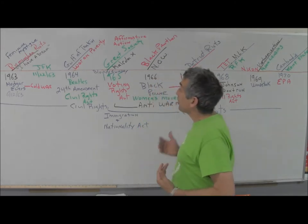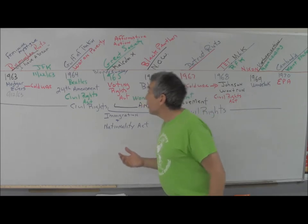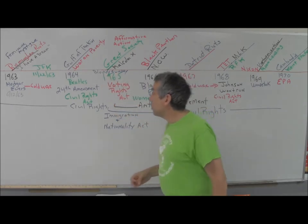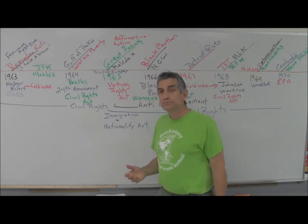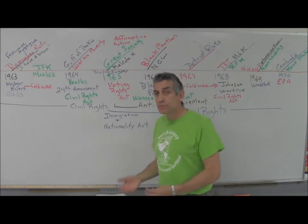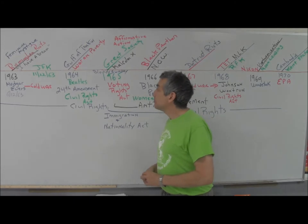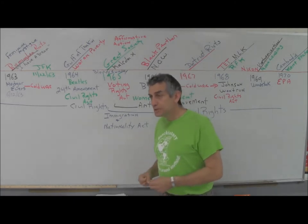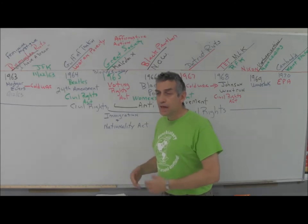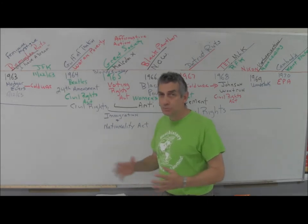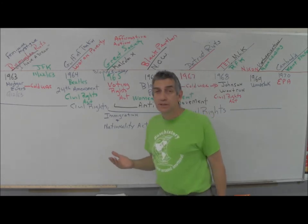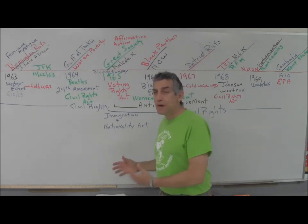During 1965, we have Bloody Sunday - the Selma march for voting registration from Selma to Birmingham. It's going to be a tremendous altercation between state police and protesters on the Pettus Bridge. It's going to be just short of a massacre of people marching for voter rights.